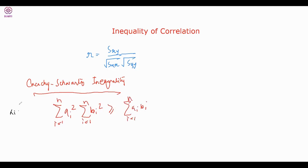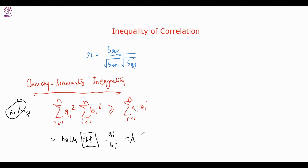Here aᵢ and bᵢ are real numbers, and equality holds if and only if aᵢ / bᵢ equals a constant for all i. This is a very beautiful inequality. It can also be interpreted in terms of vectors — that's why it has a relation with vectors.